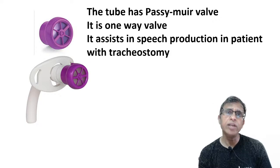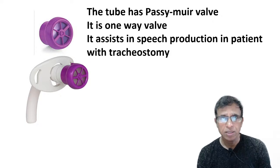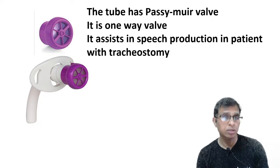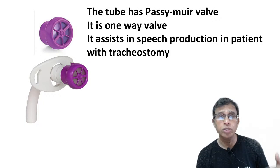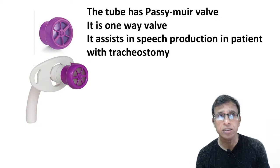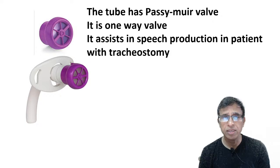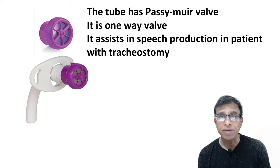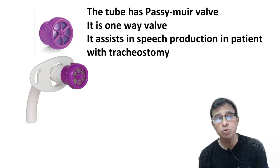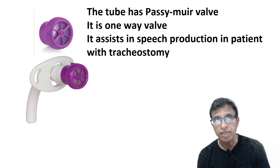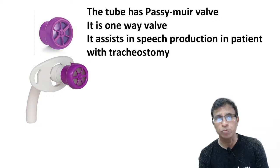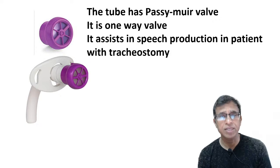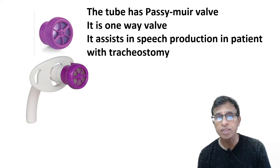If somebody has difficulty breathing and you perform a tracheostomy with a normal larynx, the patient cannot speak because air goes in and out through the tracheostomy tube, bypassing the larynx. For speech, air must pass through the larynx. So if you do a tracheostomy and the patient has a normal larynx and wants to speak, you can use the Passy Muir valve. It allows breathing in only; when the patient breathes out, air leaks from the side, passes through the larynx, and the vocal cords vibrate to produce voice. A prerequisite is that the larynx must be normal.